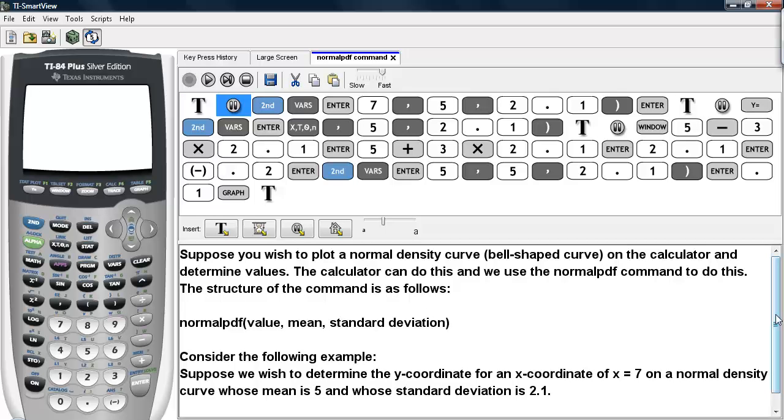Suppose we wish to plot a normal density curve, or a bell-shaped curve, on the calculator and determine values. The calculator can do this, and we will use the normalpdf command to do this. The structure of the command is as follows.